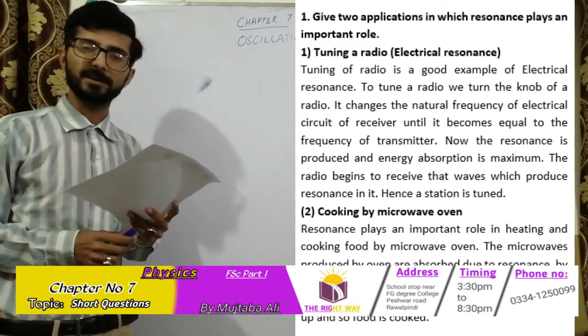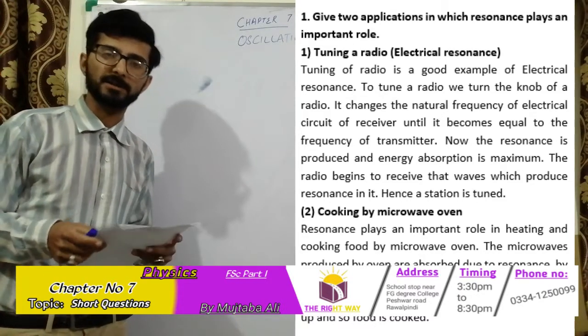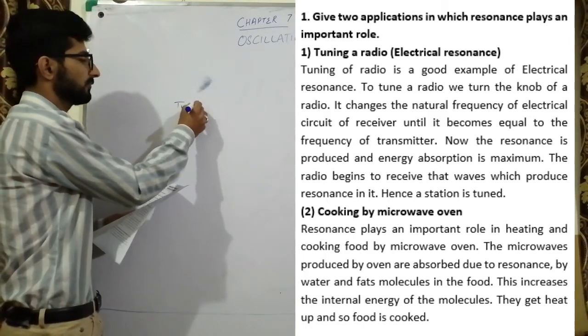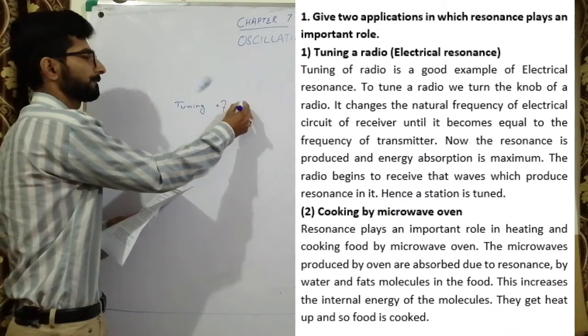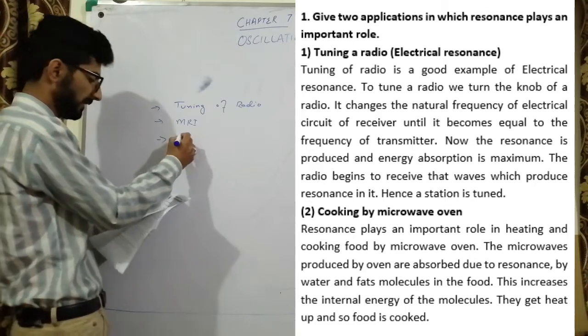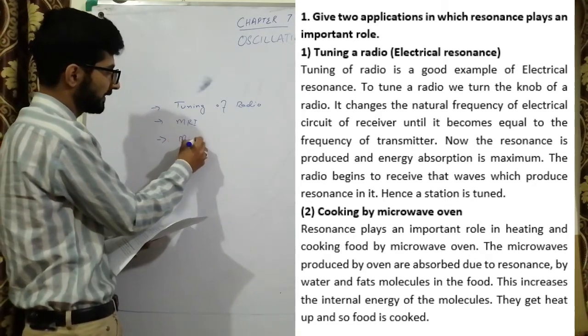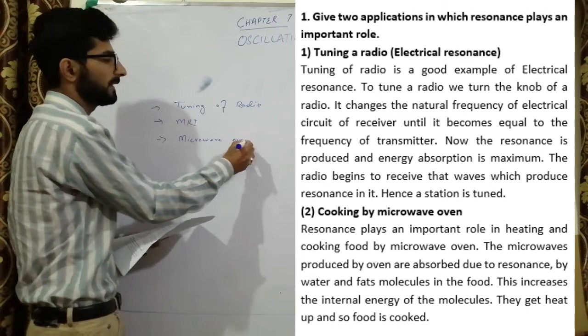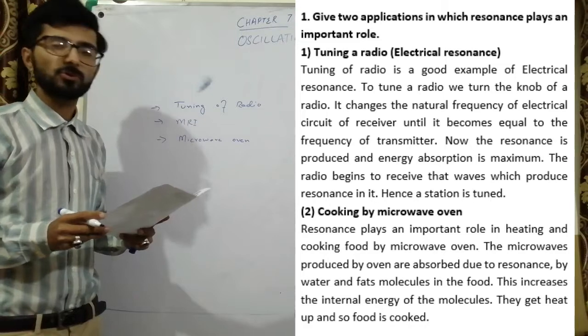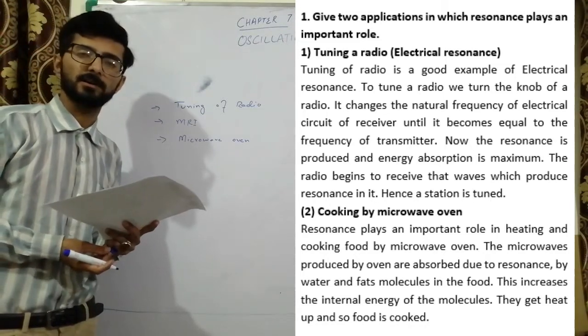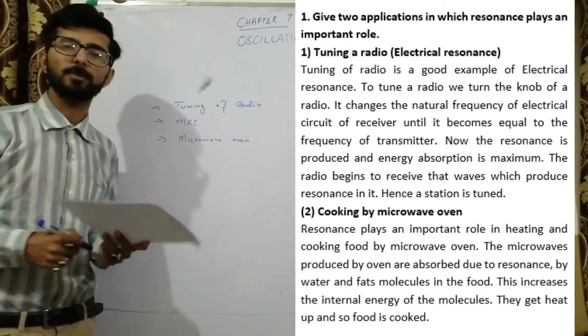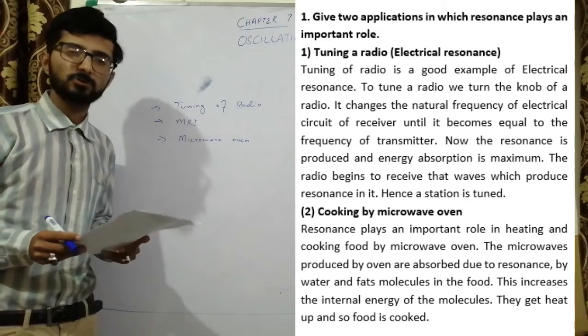There are two examples in which you have read about resonance. You can talk about tuning of radio, MRI scan, and microwave oven. The tuning of radio is a good example which we explained in the last lecture. The other is about MRI and microwave oven.